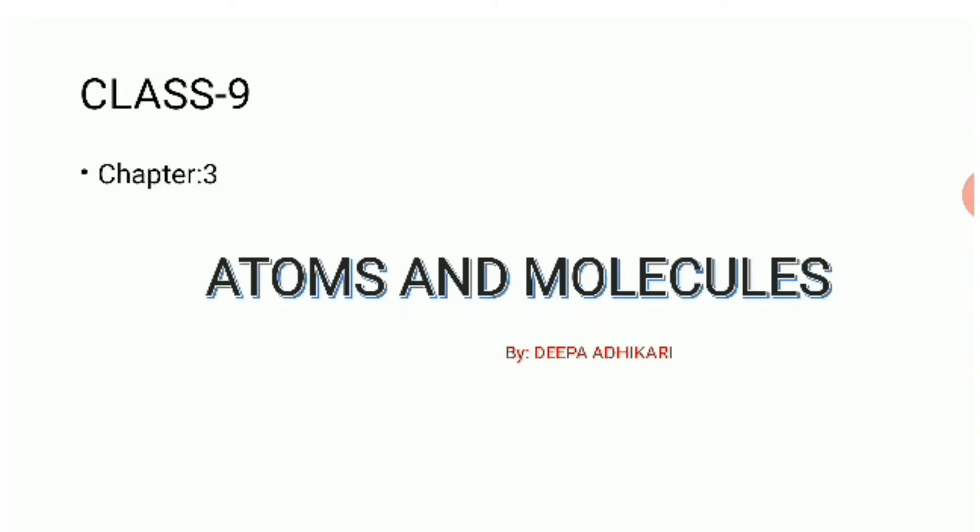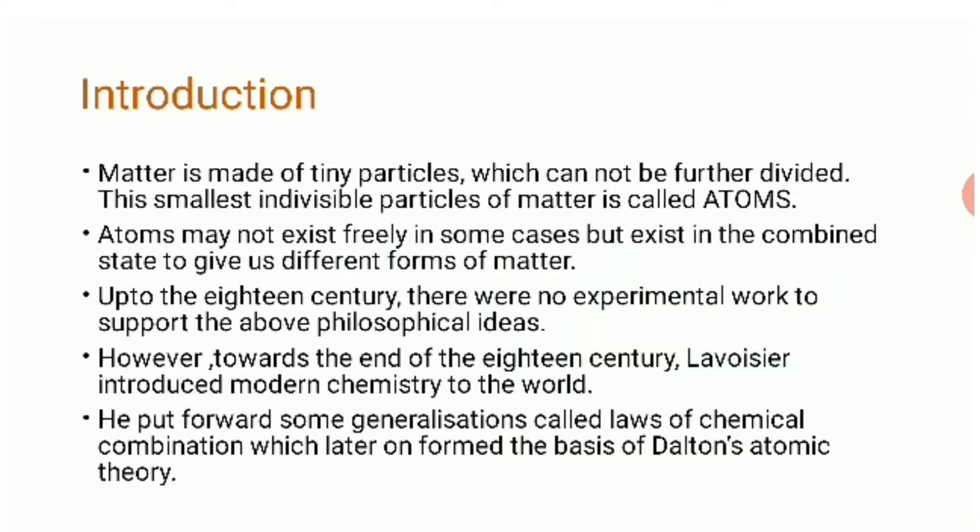Hello class 9th, hope you all are fine. Now we are starting chapter 3: Atoms and Molecules. We know that all things are made up of matter, which occupies space and has mass. Matter is made up of tiny particles which cannot be further divided. This smallest individual particle of matter is called an atom. Atoms are very small and cannot be seen with our eyes. Atoms may not exist freely in some cases but exist in a combined state to give us different forms of matter such as solid, liquid, and gases.